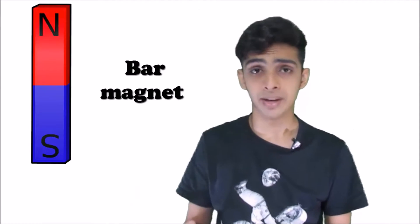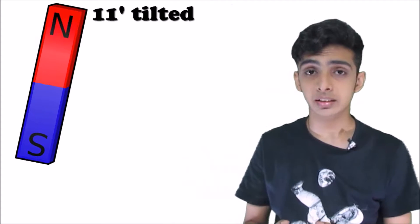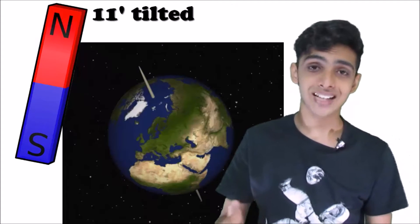The earth's magnetic field is in a way similar to that of a bar magnet, just 11 degrees tilted from the earth's axis of rotation.